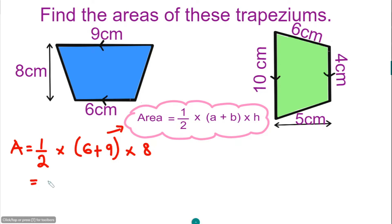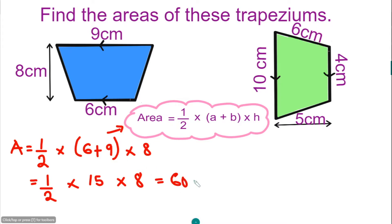If you simplify further, you're going to have a half times 15 times 8. Multiplying this gives you 60 cm squared. So the area of this blue trapezium is 60 cm squared.